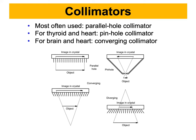We also have the pinhole collimator, shown top right. This collimator is unique because it has a single hole that allows us to magnify or minify the object based on the distance from the object. How far or close this structure is from the object determines whether the image is bigger or smaller. These collimators are used to improve spatial resolution, and one key application is to look at very small objects with high resolution.